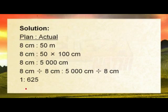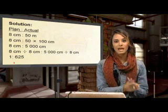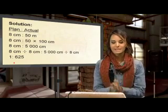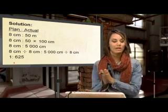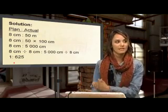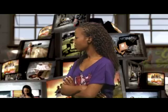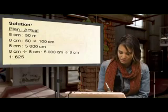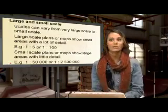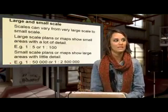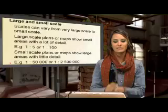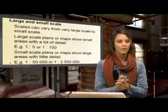And that gives us 1 to 625. What that means is that 1 centimeter on the map is 625 centimeters in reality on the ground.